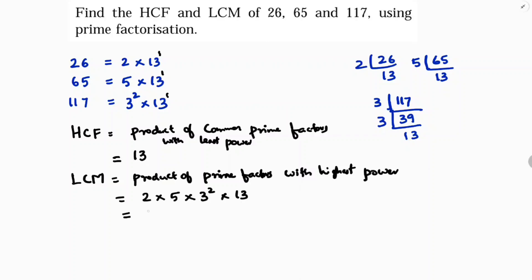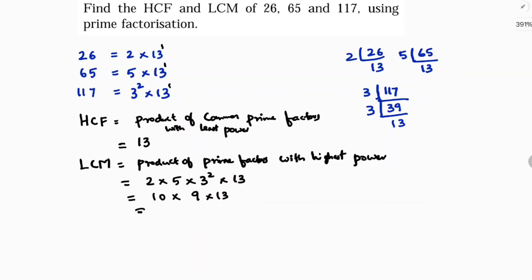Calculating: 2 × 5 = 10, and 9 × 13 = 117, so 10 × 117 = 1170. Therefore, LCM is 1170 and HCF is 13.